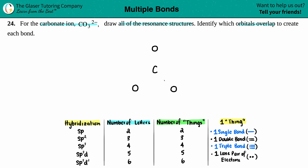Now, you just put your valence electrons around each element. Carbon has four valence electrons: 1, 2, 3, 4. And each oxygen has six valence electrons.